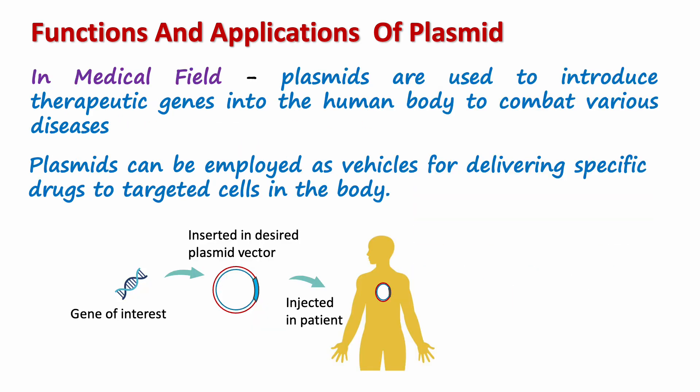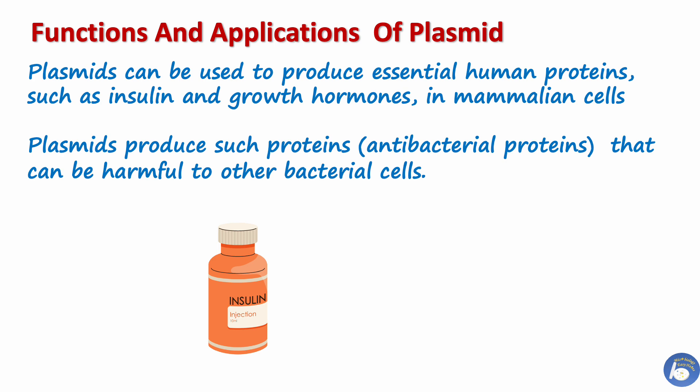In the medical field, plasmids are used to introduce therapeutic genes into the human body to combat various diseases. Plasmids can be employed as a vehicle for delivering specific drugs to targeted cells. They can also produce essential human proteins such as insulin and growth hormones in mammalian cells, as well as proteins that can be harmful to other bacterial cells.